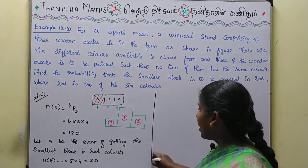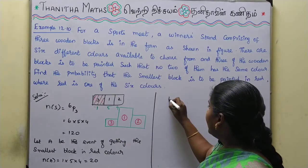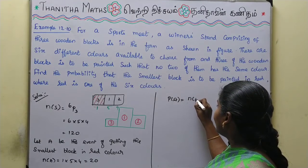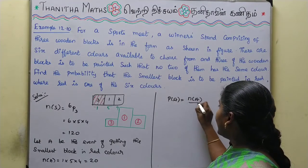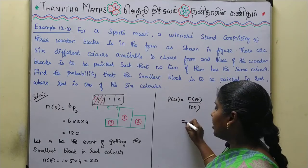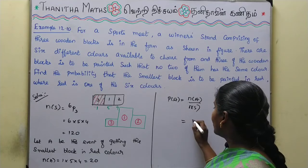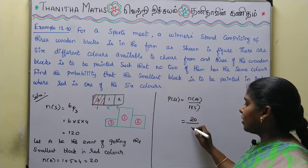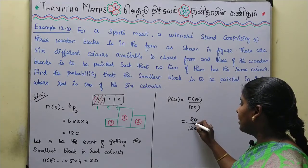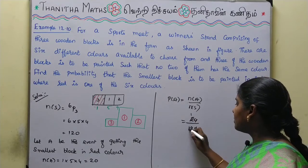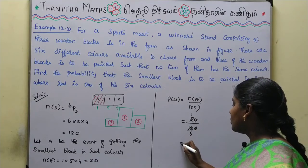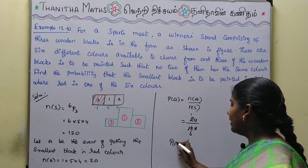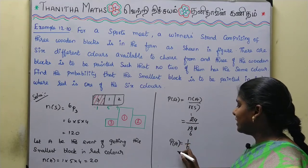P of A is equal to n of A divided by n of S. So P(A) = 20 divided by 120. We can simplify: 20/120 = 1/6. So 1/6 is our required answer.